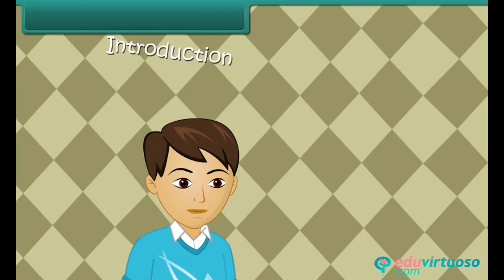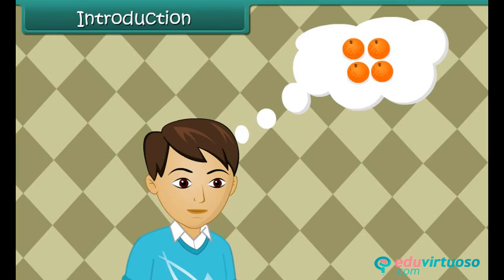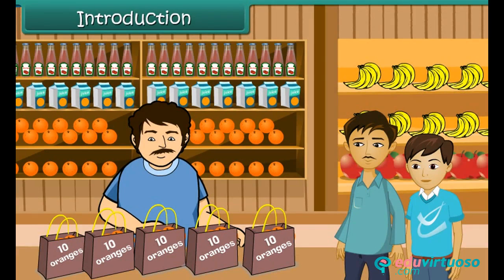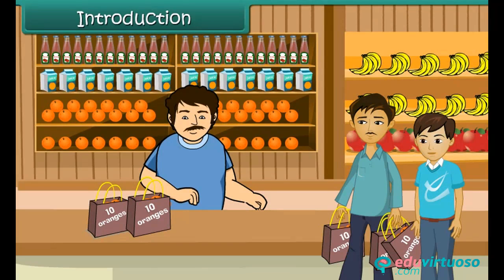Vivek loves oranges. He has come to the fruit market with his father to buy oranges. He finds one shopkeeper selling oranges in bags of ten each. His father buys three bags for Vivek.